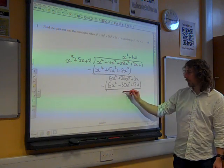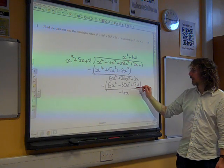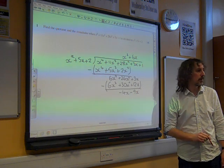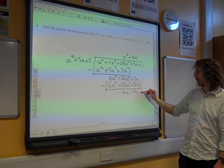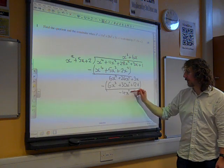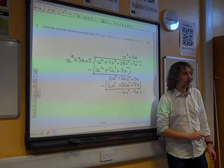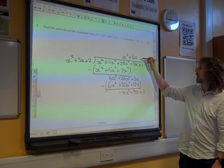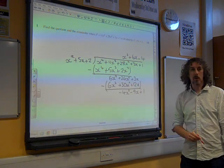Again we subtract, leaving us with minus 4x squared, take away 9x. And we bring down the 1 to sit at the end. And that was an x squared then, wasn't it? And then we say, what would you multiply x squared by to get minus 4x squared? The answer is minus 4.